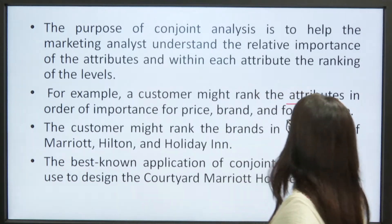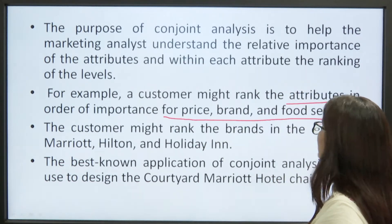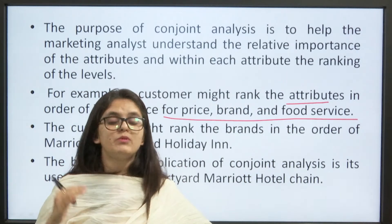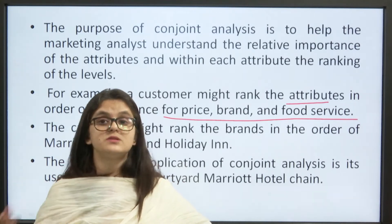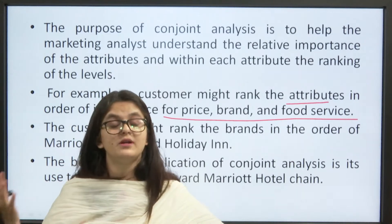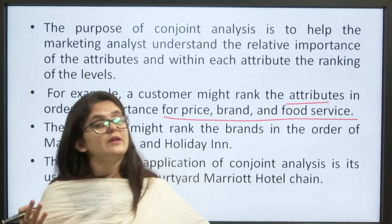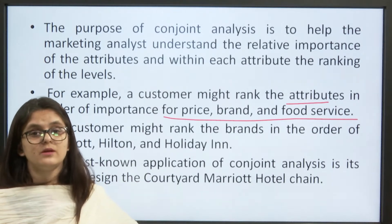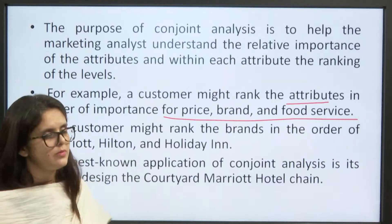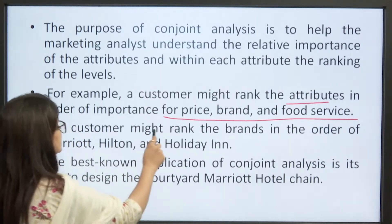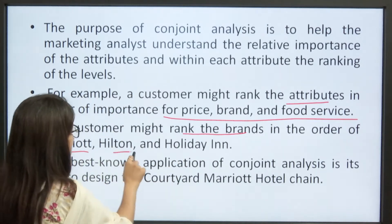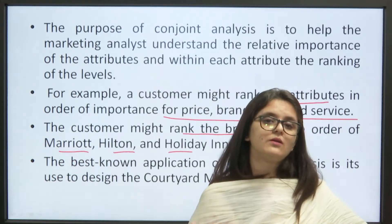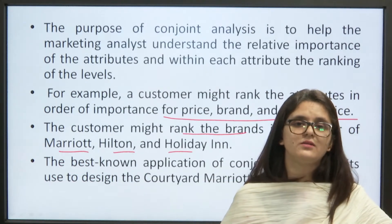For example, a customer might rank the attributes in order of importance: price, brand, and food services. For some people brand is important, for some people services are important, and for some people price is important. Depending on the type of customer, the attributes hold different levels of importance. The customer might rank hotel brands in order: Marriott, Hilton, and Holiday Inn, depending on their preferences.